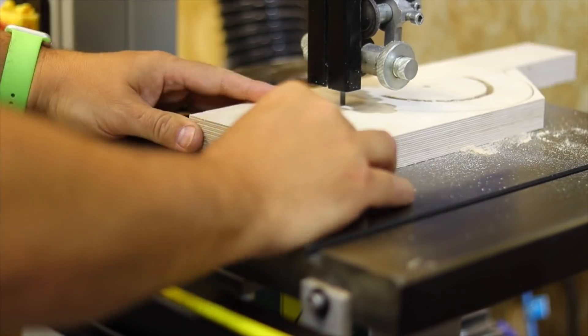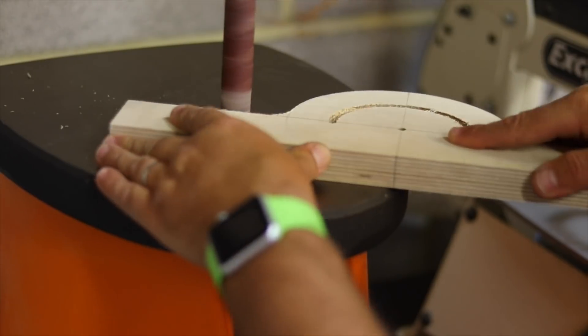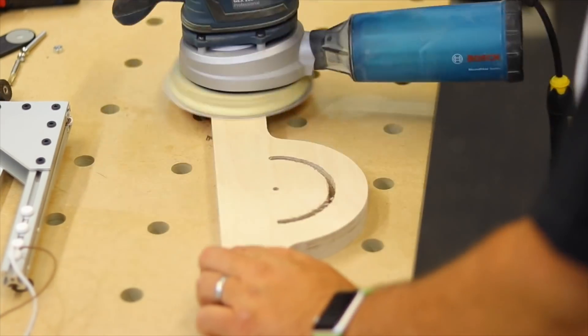So just cutting it out on the band saw, and I think I tidy it up on the bobbin sander just to get a nice enough shape, give it a bit of a clean.